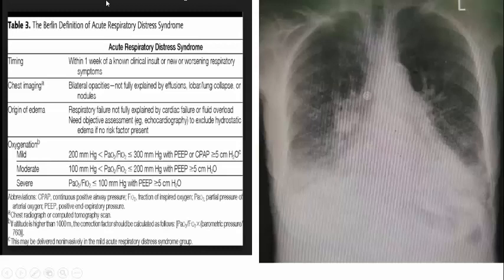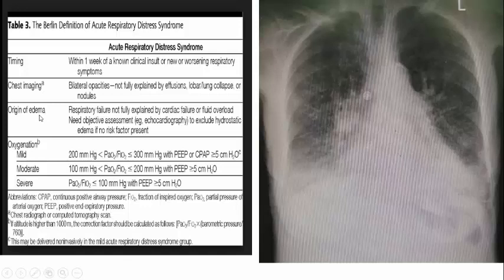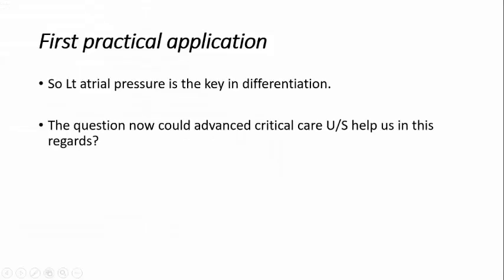Berlin definition of acute respiratory distress syndrome. Timing: you need acute respiratory failure within one week of clinical insult — this happened for the patient. Number two: bilateral opacities not fully explained by effusion, lobar collapse, or nodules — and this is the case here, no collapse, no massive pleural effusion, no nodules. The important third point to reach the diagnosis of non-cardiogenic pulmonary edema is respiratory failure not fully explained by cardiac failure or fluid overload — requiring objective assessment, echocardiography, to exclude hydrostatic edema. This is very important.